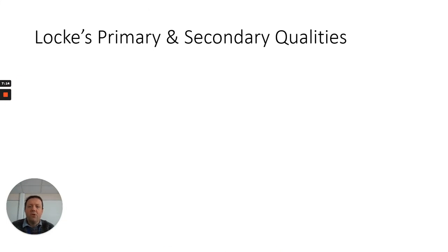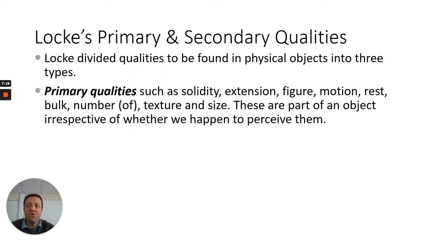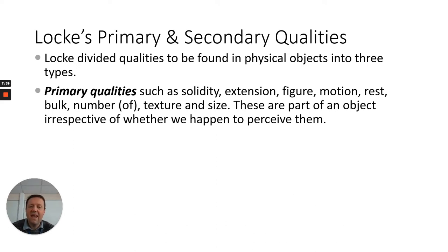Let's now look at an important distinction within representative realism: the distinction between primary and secondary qualities. Locke divided these qualities into three types, but overall it's a distinction between two ideas. There are the primary qualities of an object, such as solidity, extension, motion, and so on. Anything that has a size must also have a shape — these are two primary qualities of an object. Anything that exists as a physical thing must have a size and a shape.